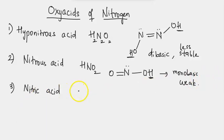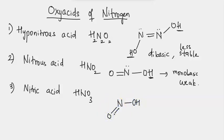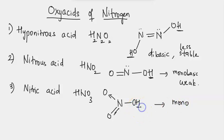The third compound is nitric acid with the formula HNO3. Nitrogen is the central atom connected to OH on one side, a double-bonded oxygen on another side, and a third oxygen connected by a coordinate covalent bond. HNO3 is also a monobasic acid because only one hydrogen is directly connected to oxygen, but it is a strong acid, unlike nitrous acid.